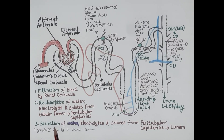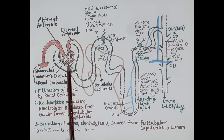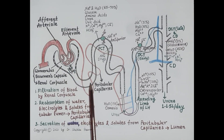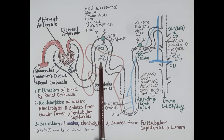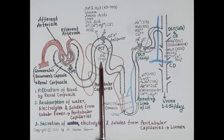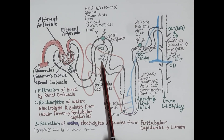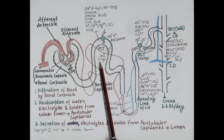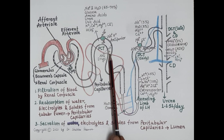The third step in the formation of urine is secretion. Substances not required by the body but which could not be filtered through the glomerulus are transported from the blood into the peritubular capillaries. Drugs like aspirin and penicillin are examples — these substances are not filtered, so they pass into the peritubular capillaries, and from there they are secreted into the tubular lumen.